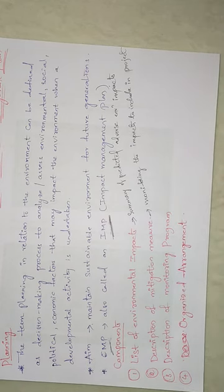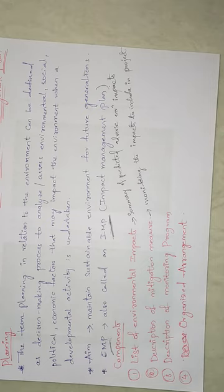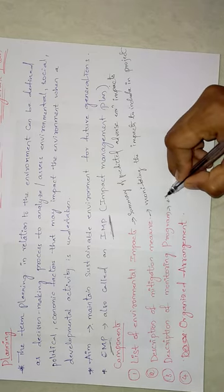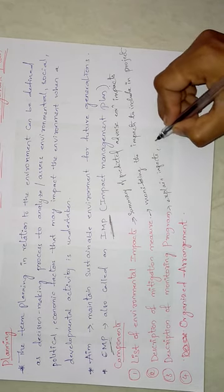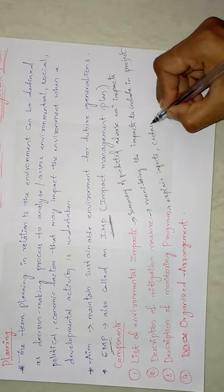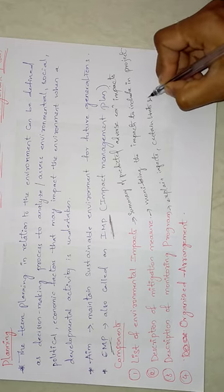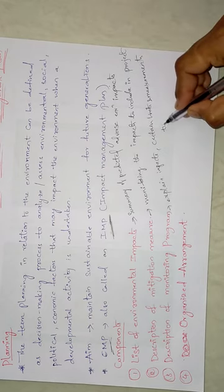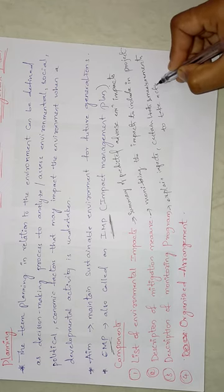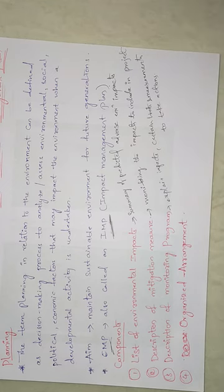The third component is the description of the monitoring program. This program should explain the impacts, provide measurement indicators, and define limits that will indicate when corrective actions need to be taken. In short, it should explain impacts and provide limits and measurements to take necessary actions.